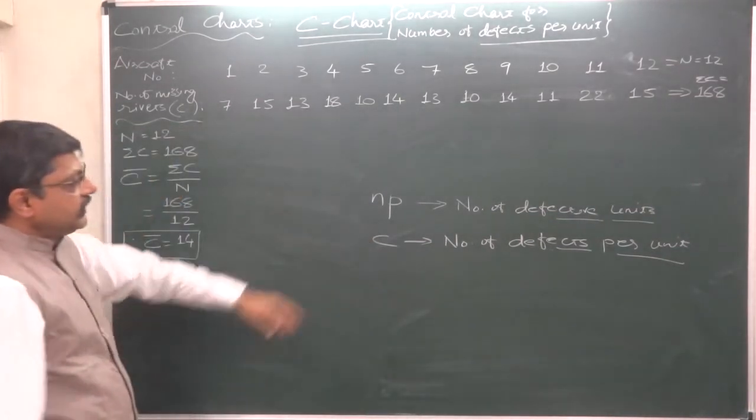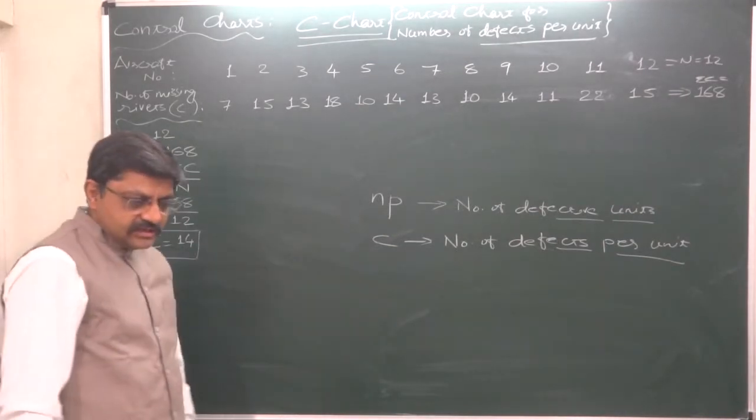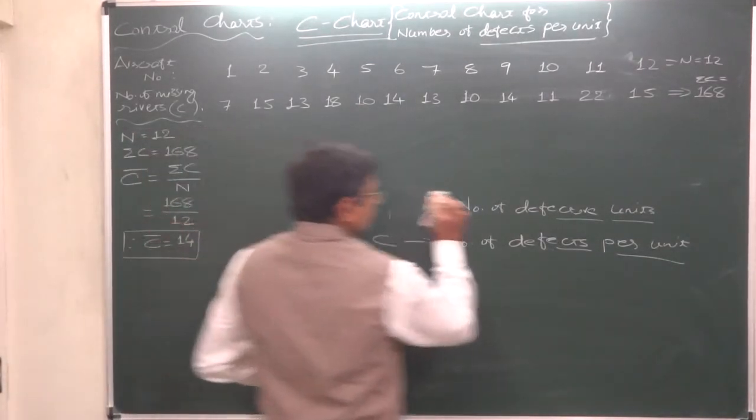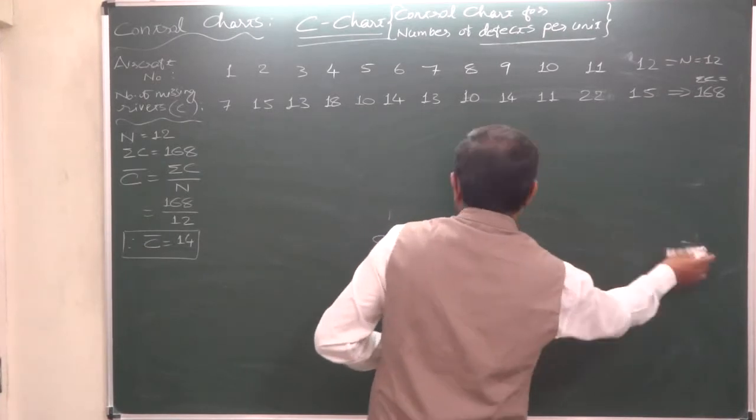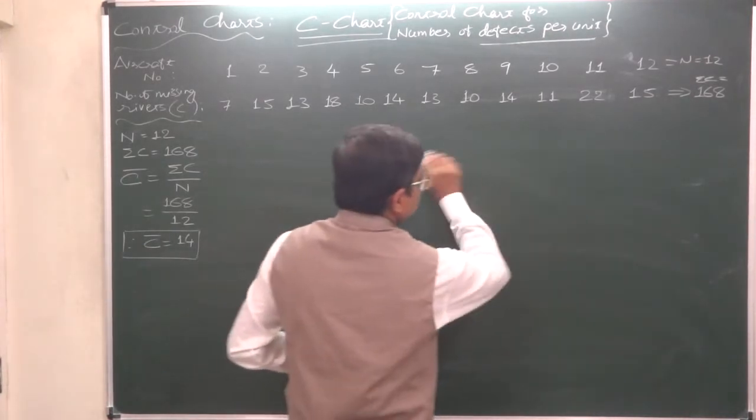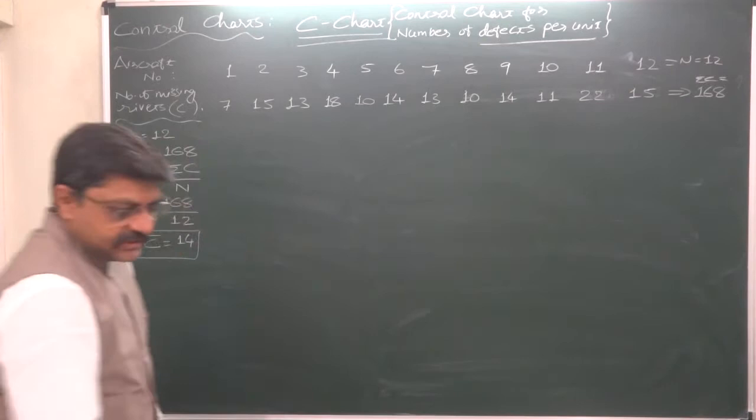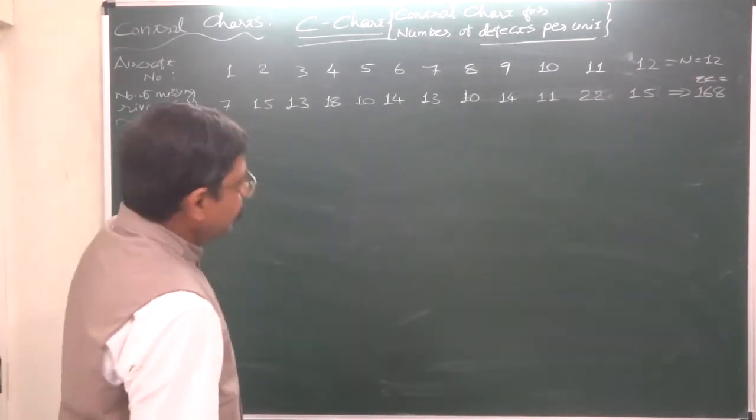I hope it is now clear in your mind what is the difference between previous charts and this C chart. Let's go for the construction of chart and drawing conclusion. I can say that this is the easiest control chart.